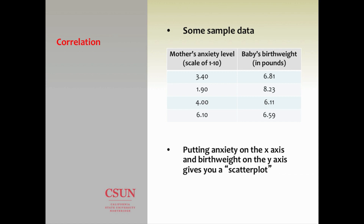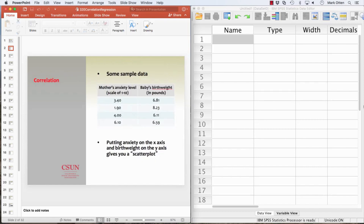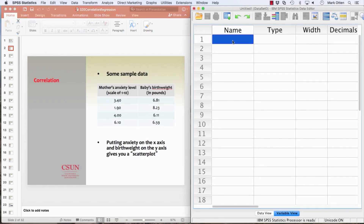We're going to start by making a scatter plot of these data. The scatter plot shows one variable on the x-axis and the other on the y-axis. I'm going to go over here to SPSS and call the first variable mom's anxiety and the second variable birth weight.